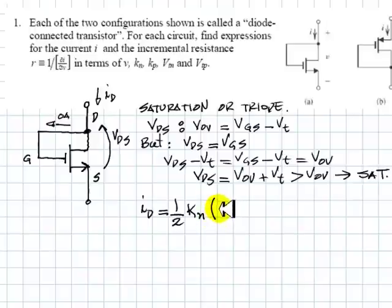That ID was one half KN multiplied by VOV squared. That is, by VGS minus VT squared. And in this case,